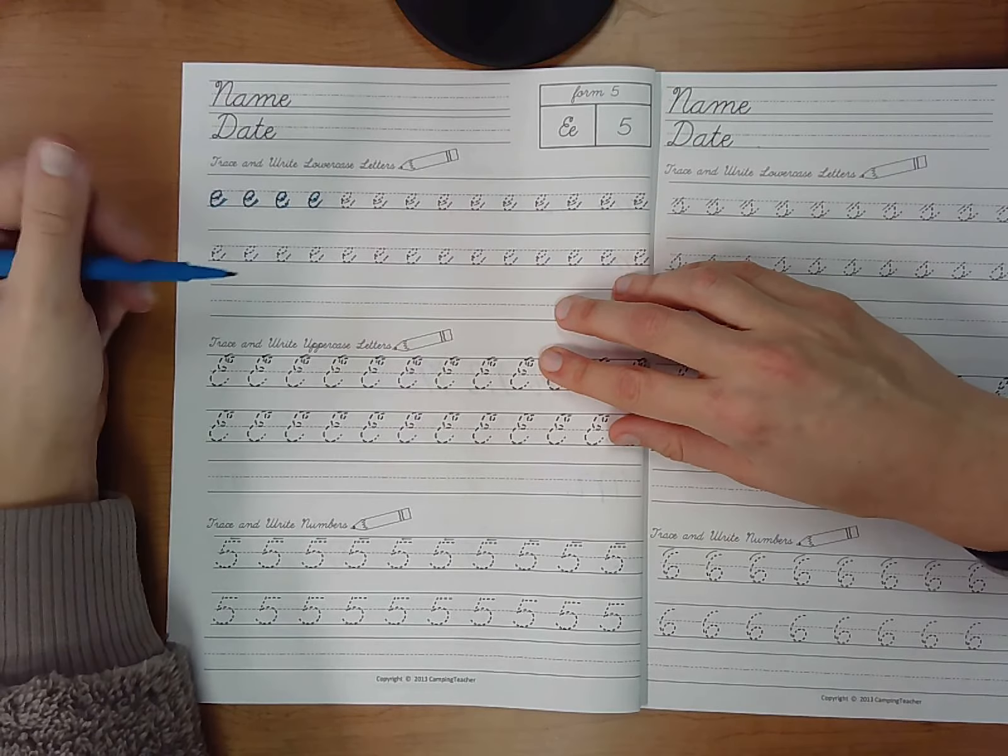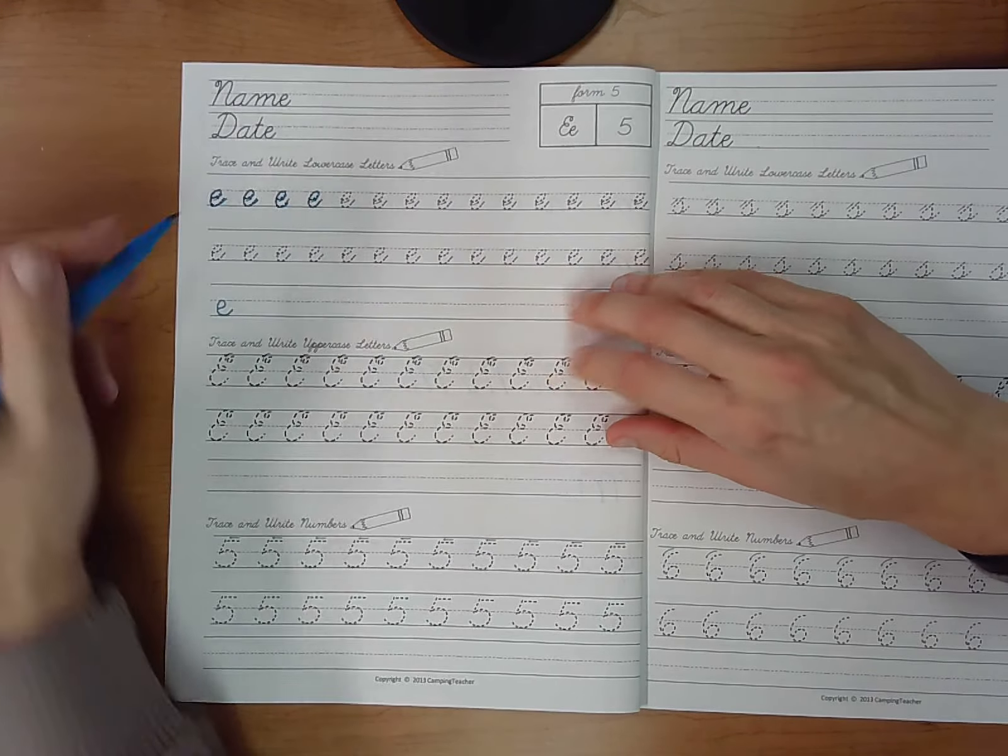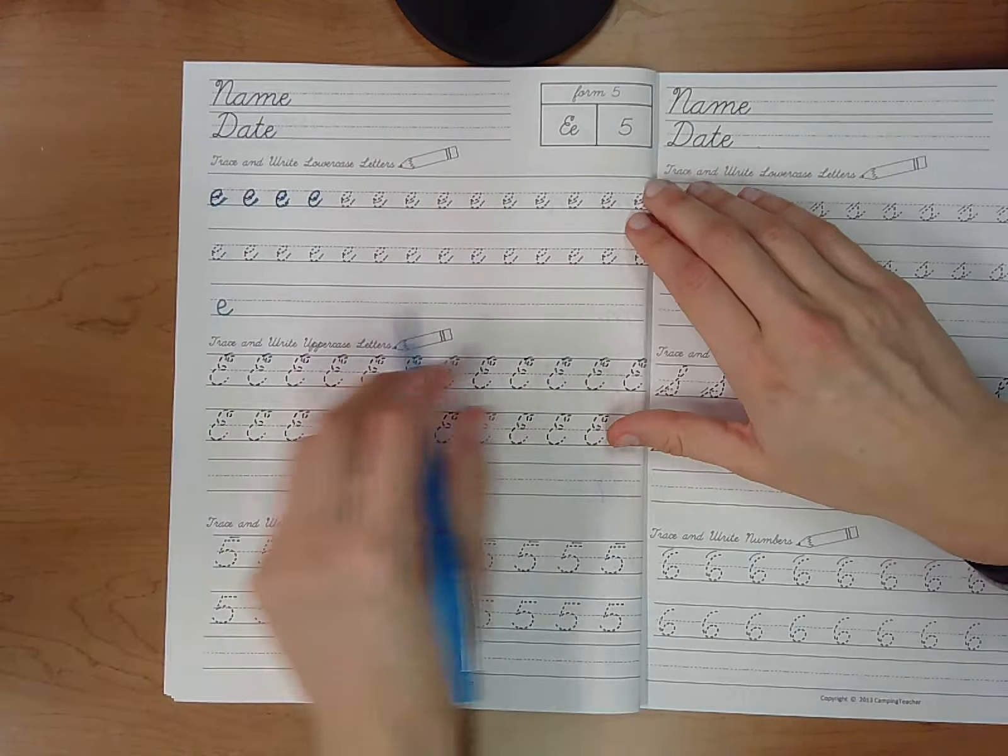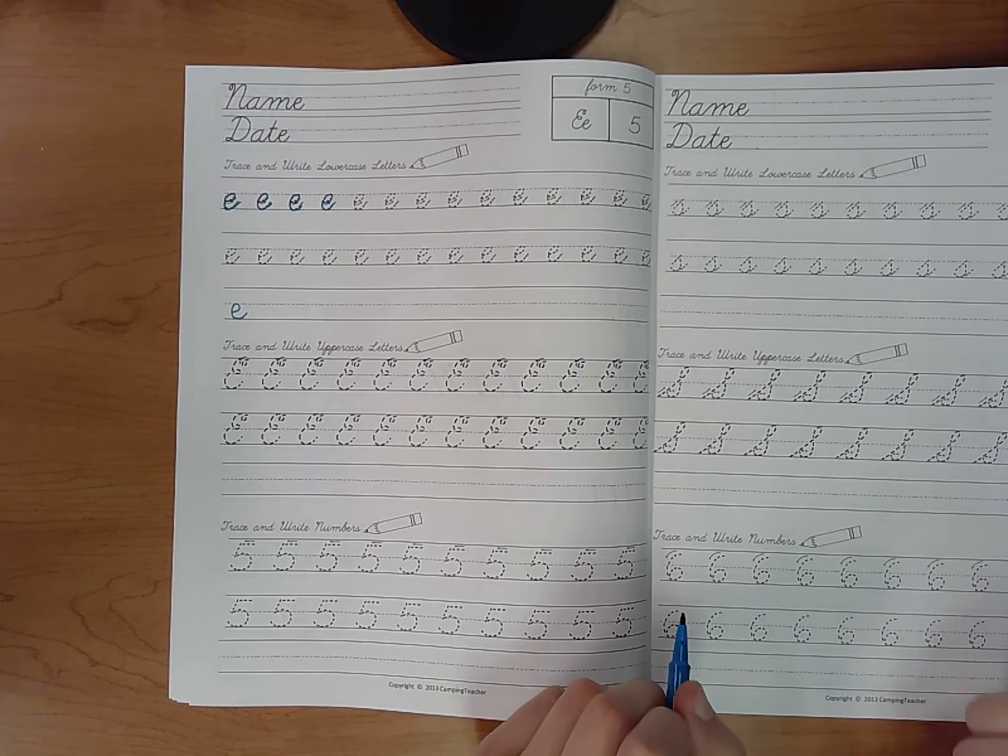Once you do all of your tracing Es, make sure that you do your Es on your own all the way across the page. You can click pause when you are done or to let yourself finish. When you are done hit play to continue with uppercase E.